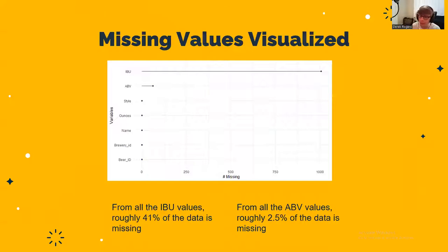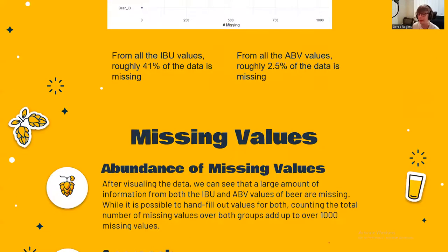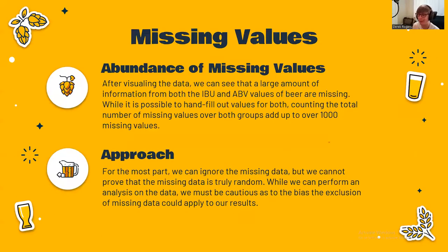Before we go any further, there are quite a few missing IBU values and a few missing ABV values from the beer data set — everything else has no missing values. What my partner and I did is: if we're looking at ABVs, we removed all the beers without ABV values; if we're looking at ABV and IBU, then we remove beer data that is missing either.